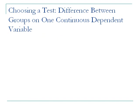Starting off, let's talk about choosing a test, beginning with instances where you're interested in looking at the difference between groups on one continuous dependent variable. What is a continuous dependent variable versus a discrete or categorical dependent variable? Continuous means it can take on an infinite number of values — you can have more or less of the dependent variable. Versus a discontinuous or categorical dependent variable, where the DV can be one thing or another, but not different amounts — qualitative differences.